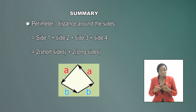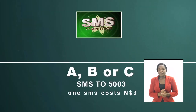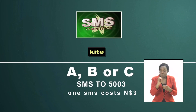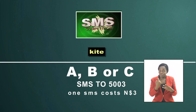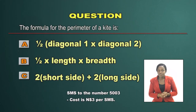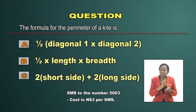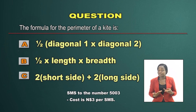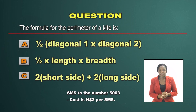Please also participate in our SMS competition. The keyword for today's program is kite. SMS your answer to the number 5003. Write the keyword kite with only the correct letter for the answer you choose. The question is: what is the formula to calculate the perimeter of a kite? Is it A: half times diagonal 1 times diagonal 2; B: half times length times breadth; or C: 2 times short side plus 2 times long side? Let us know and we'll reward some winners with a prize. Next time we will discuss the area and perimeter of the trapezium. Goodbye.